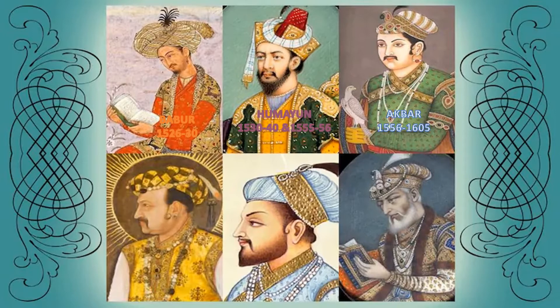The next important king is Akbar, who ruled from 1556 to 1605. He was the greatest emperor of the Mughal Empire and is an icon of secularism. He had good relations with Rajputs, Sikhs, and Marathas, and abolished the Jizya tax which was imposed on Hindus and non-Muslims. That is why he is considered the greatest emperor of the Mughal Empire.